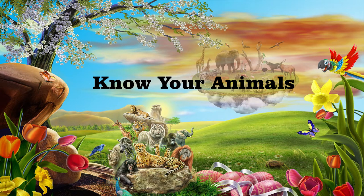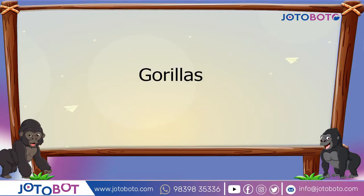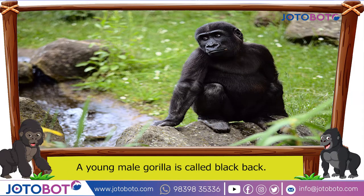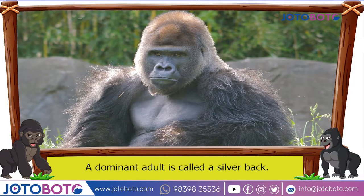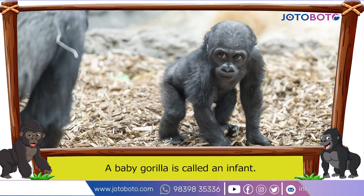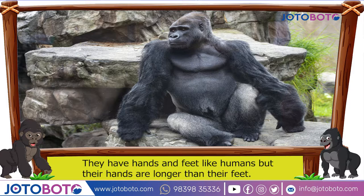Know your animals: animals beginning with G, part 2. Gorillas — there is no specific name for a female gorilla. A young male gorilla is called a black back, and the dominant adult is called a silver back. A baby gorilla is called an infant. Gorillas are found mainly in Africa. They have hands and feet like humans, but their hands are longer than their feet.